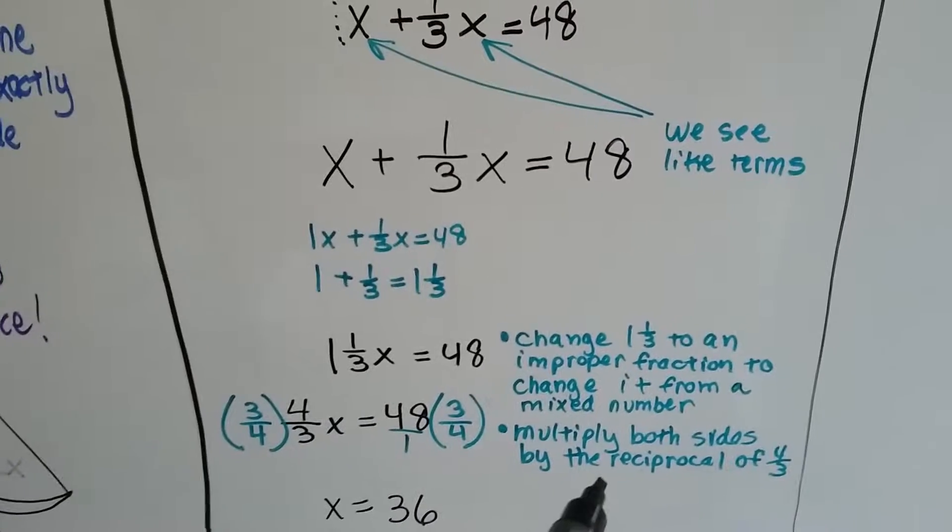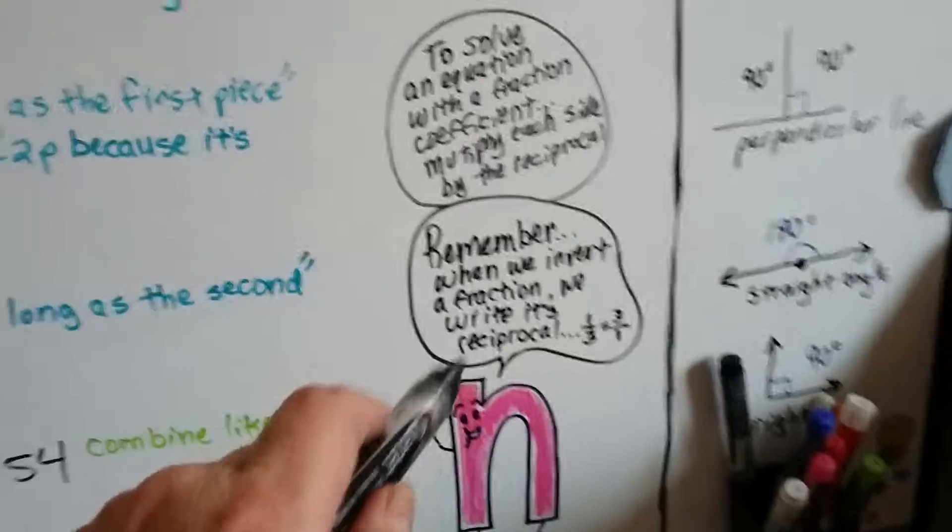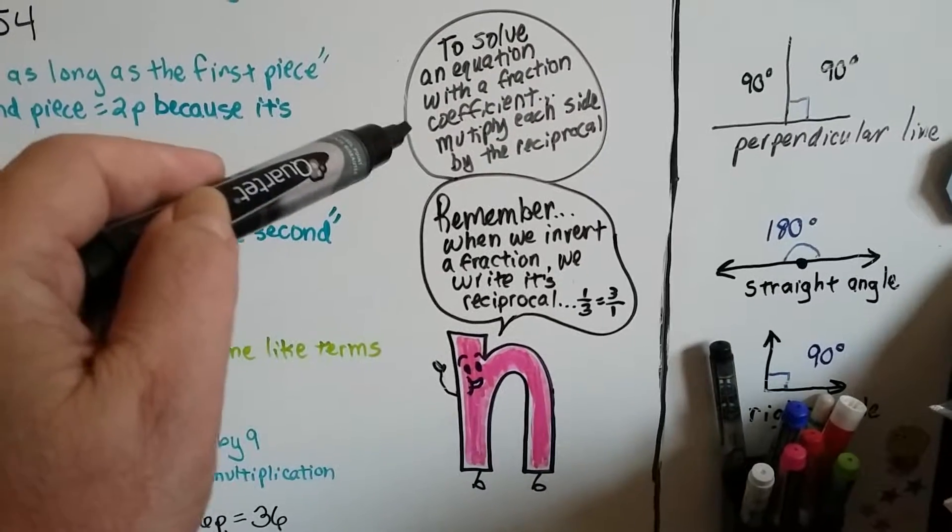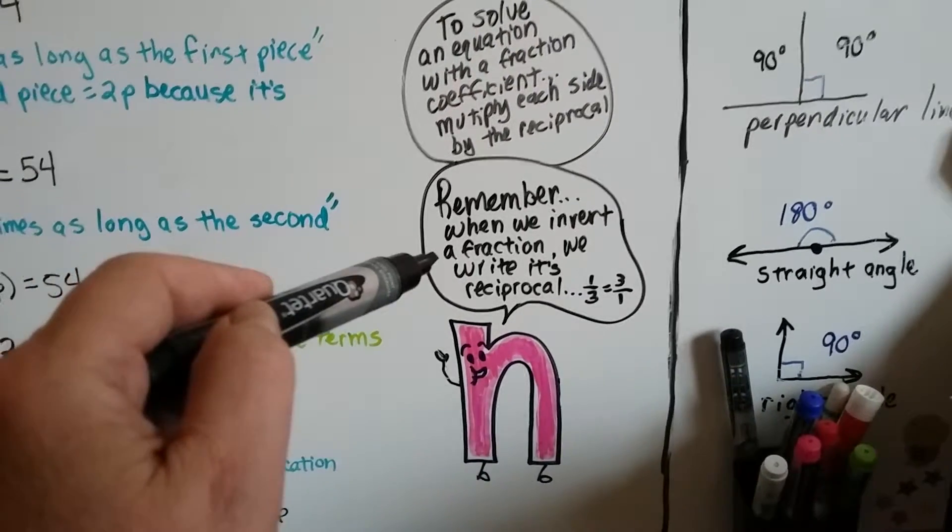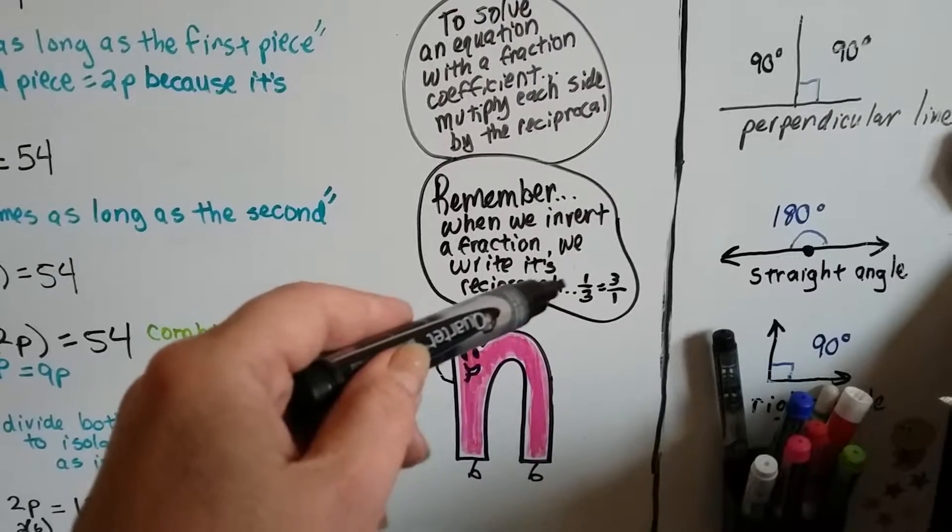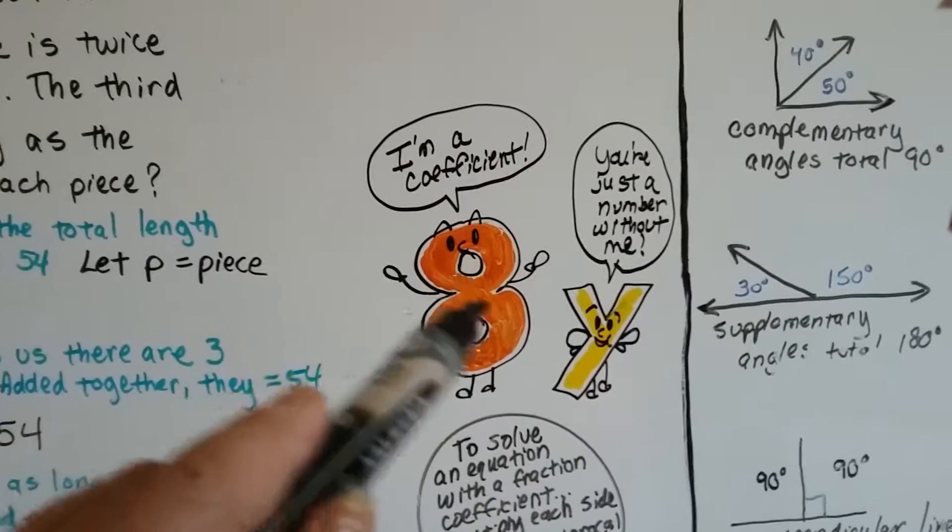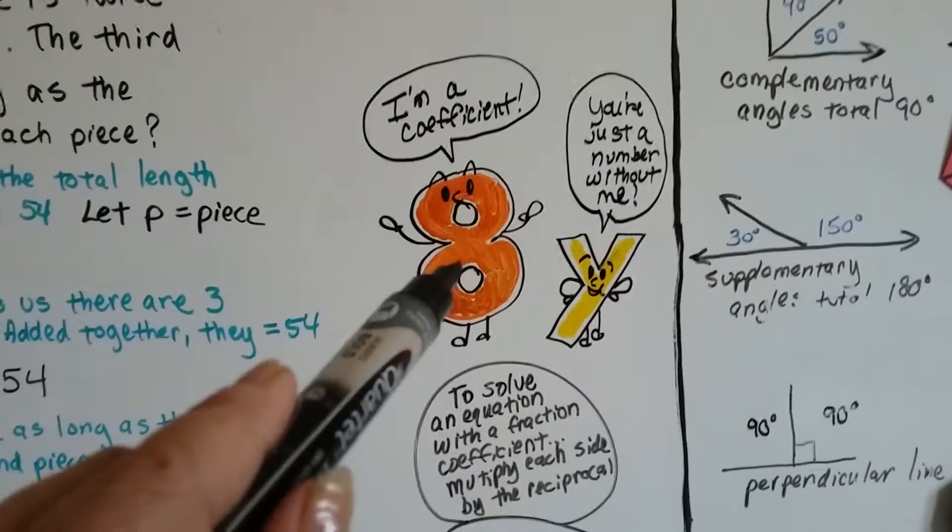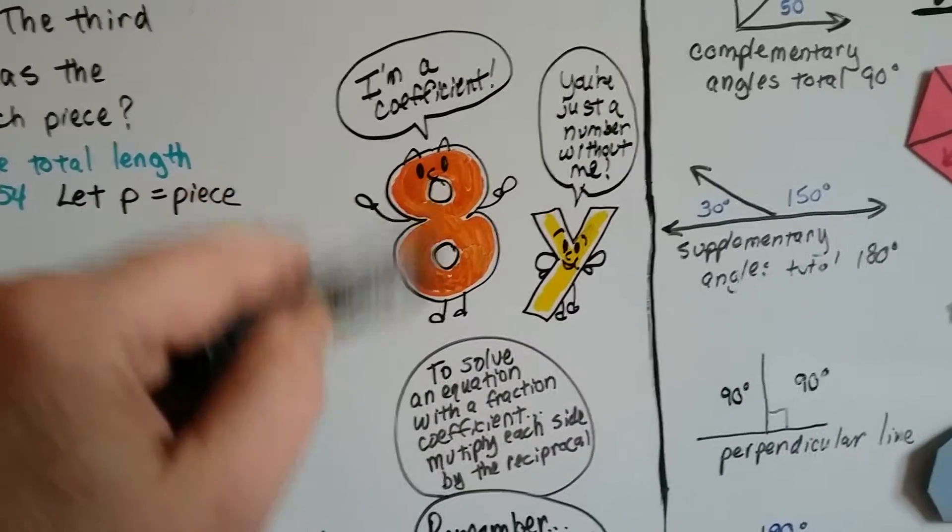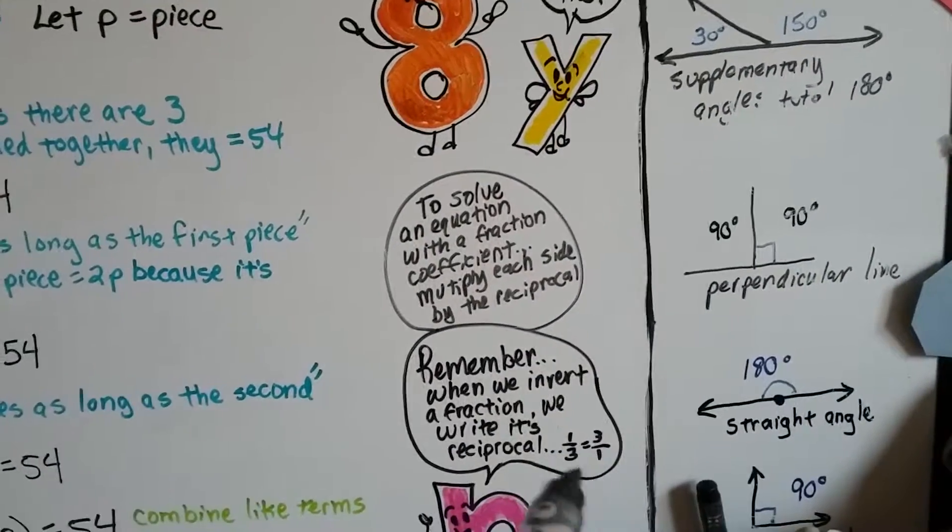Now it's a fraction, so we need to multiply both sides by the reciprocal of four-thirds. To solve an equation with a fraction coefficient, you multiply each side by the reciprocal. When we invert a fraction, we flip it upside down—it's the reciprocal. One-third is three over one. The coefficient is the number in front of the variable. If the variable isn't there, then he's just a stand-alone number.